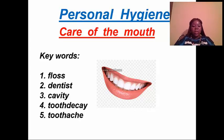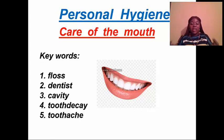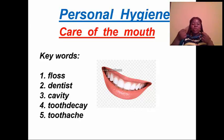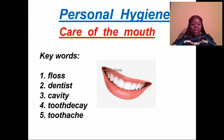Number one, we have floss — a dental floss. We use a floss for picking our teeth. For example, if you're eating beef or chicken and a piece gets in between your teeth, instead of using a sharp object or your fingernail to pull it out, you're supposed to use a floss. You'll see how it is used later in our lesson.